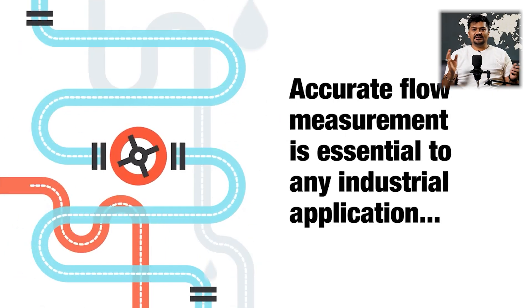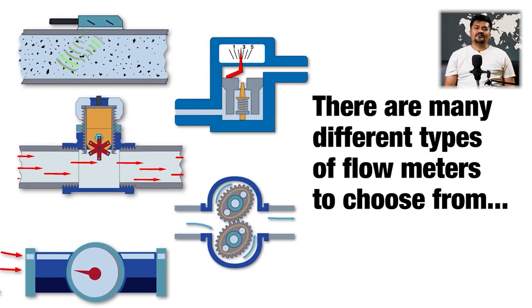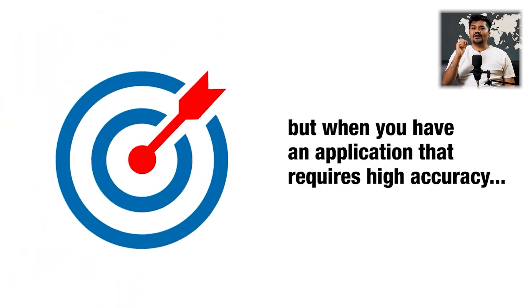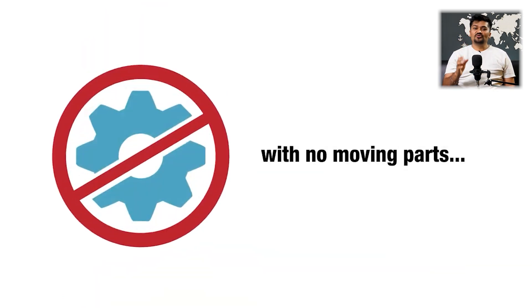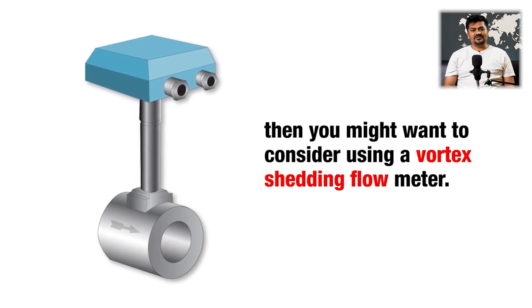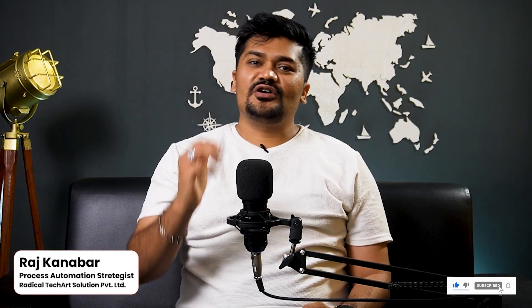Accurate flow measurement is essential to any industrial application. There are many different types of flow meters to choose from, but when you have an application that requires high accuracy with no moving parts required, then you might want to consider using the vortex flow meter. Welcome — this is Raj from Radical Tech Art, your process automation strategist.